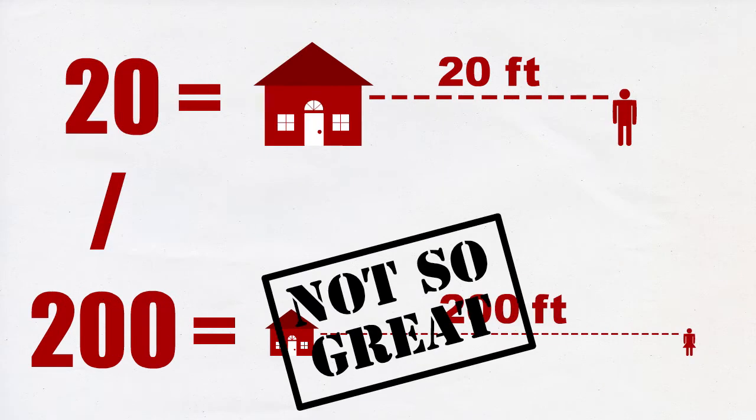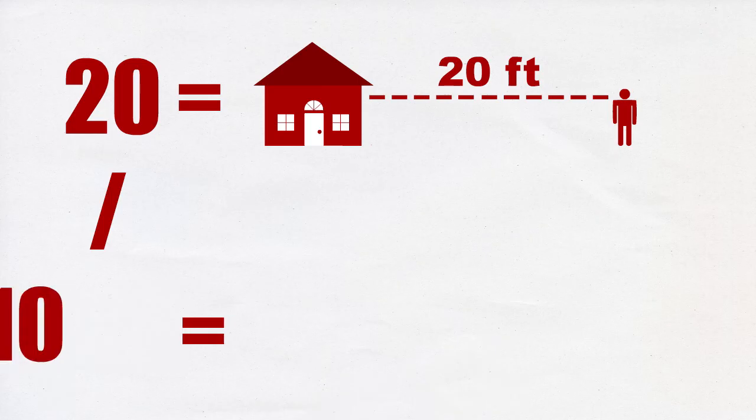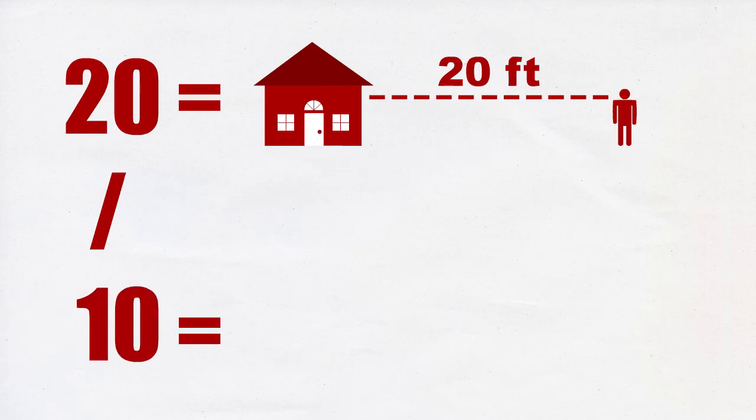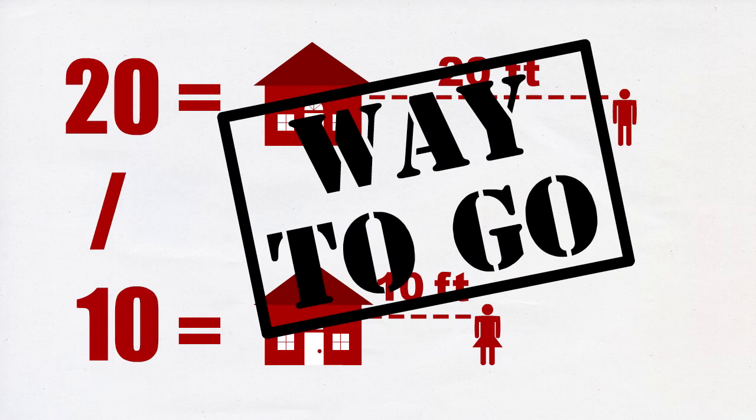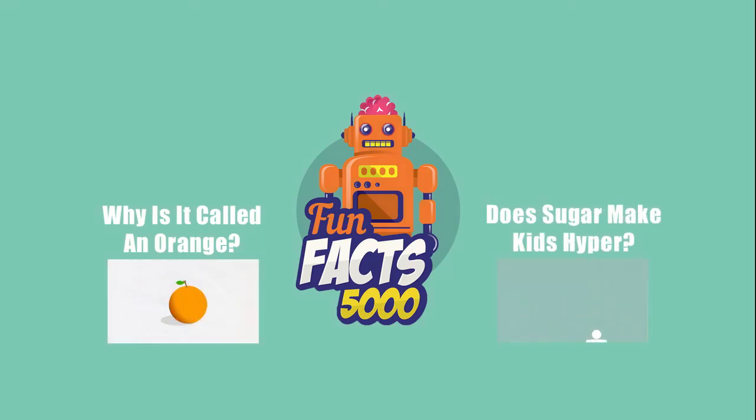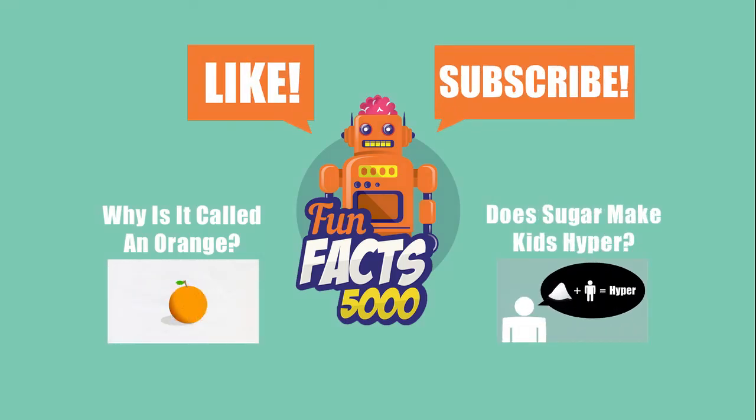Not so great. A person with 20/10 vision can see something 20 feet away that a normal person can only see at 10 feet, which means you're practically superhuman. Way to go! Thanks for watching everyone, please like and subscribe